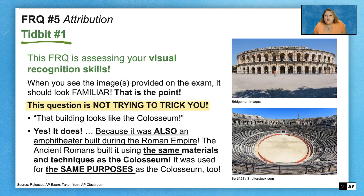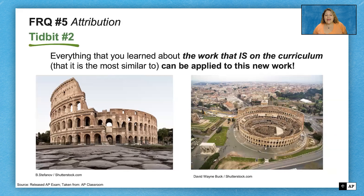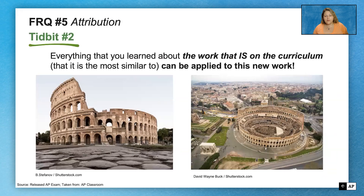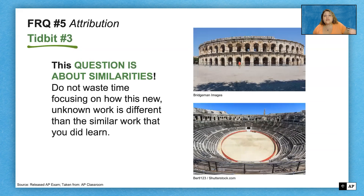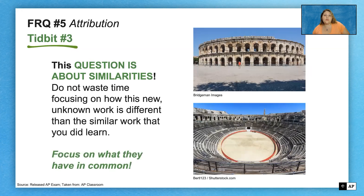They're not asking you to know this building, but you know the culture that made it. Tidbit number two: everything you learned about the work this one is most similar to — the Colosseum, the Flavian amphitheater — you can apply to this question. Tidbit number three: this question is about similarities. I cannot stress this enough. Do not waste your time on differences. Focus on what they have in common — what does this building share with the building you did learn that it looks most similar to?